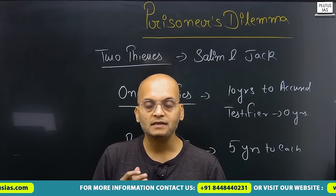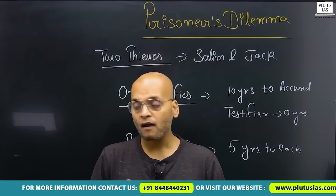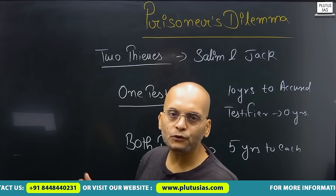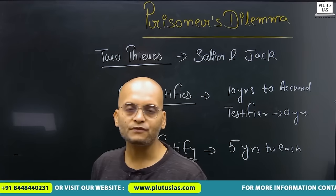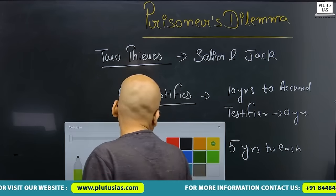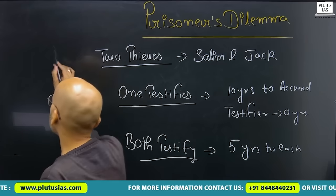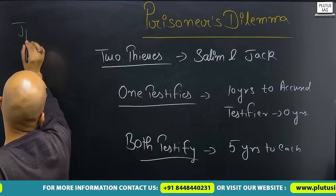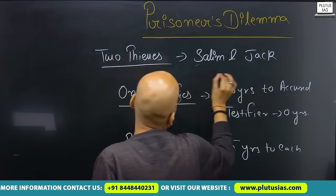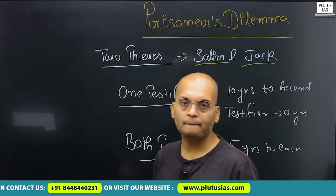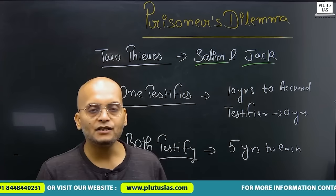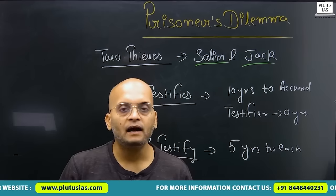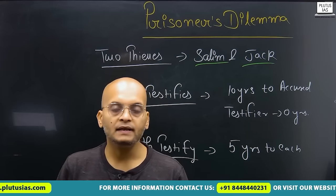Therefore, we have a new theory — the theory of Prisoner's Dilemma. To understand Prisoner's Dilemma, let's consider two thieves named Salim and Jack. They have committed a theft.